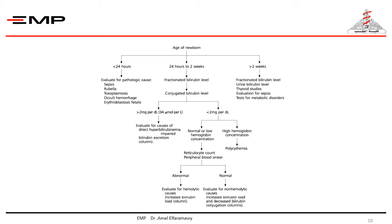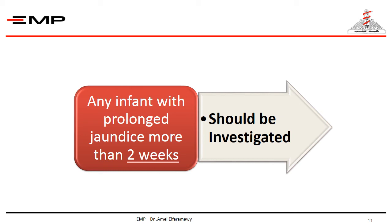You have to recognize which type of bilirubin is elevated, as each one has a totally different differential diagnosis. While indirect hyperbilirubinemia is more common and sometimes physiological, as in physiological jaundice, or benign as in breast milk jaundice, direct hyperbilirubinemia is always pathological and indicates liver disease. The recommendation of the American Academy of Pediatrics is that any infant with prolonged jaundice more than 2 weeks should be investigated, basically by fractionated bilirubin, then to proceed accordingly.